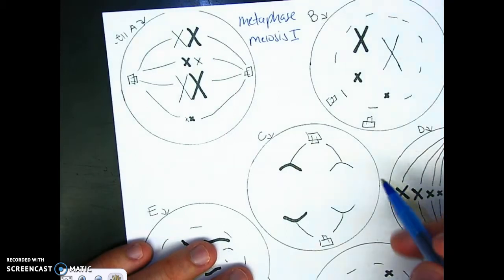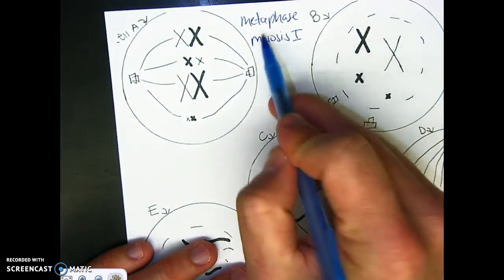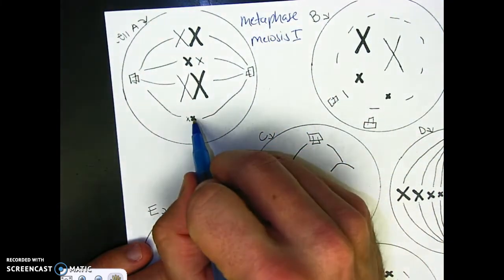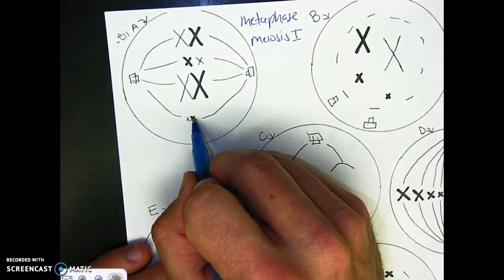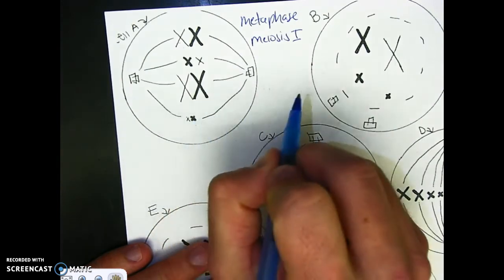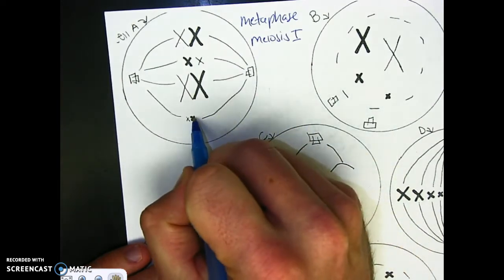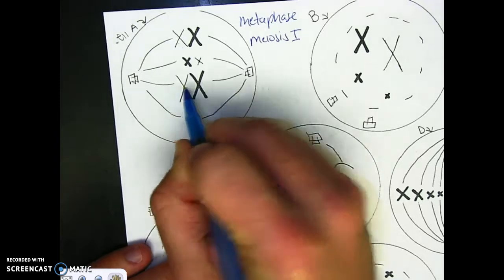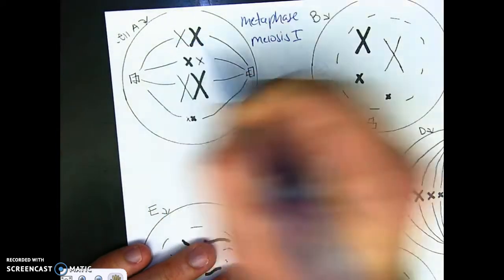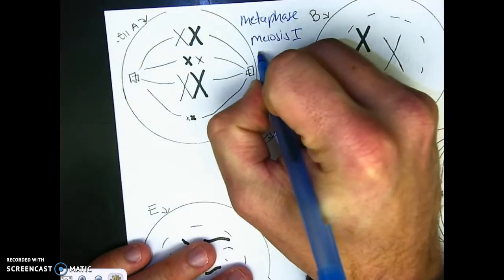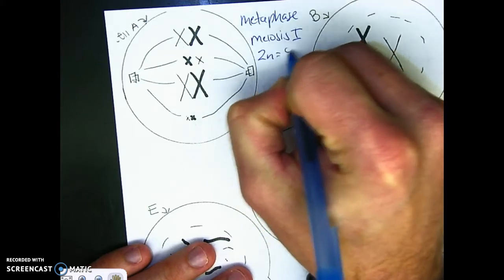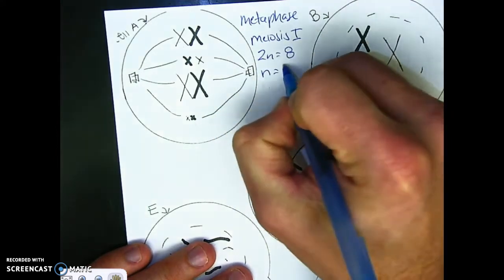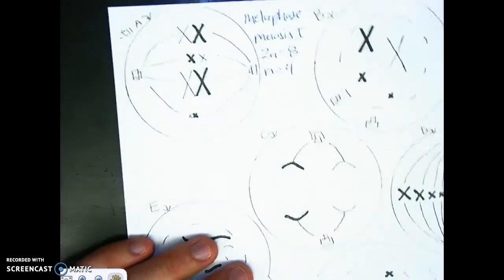What's the haploid and diploid number? Metaphase in meiosis 1 is diploid, so I count the number of replicated chromosomes — not tetrads, I'm counting chromosomes: 1, 2, 3, 4, 5, 6, 7, 8. My diploid or 2N number is 8. My haploid would have to be half of that, which is 4.